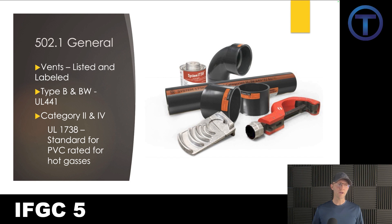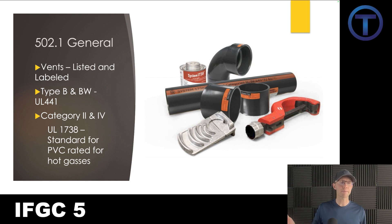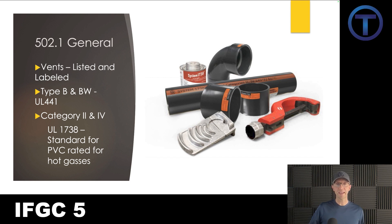Moving to 502.1, which gives general information about the vents themselves — this is where we narrow down what is acceptable for vent pipe. First of all, vents have to be listed and labeled. If we're going to connect a gas appliance to a piece of pipe, it can't be just any old piece of pipe. These have to meet certain standards. Type B and BW vents have to meet the UL 441 listing, which is the manufacturer specification that defines the minimum standards for that vent type, verified by a third-party certification company.